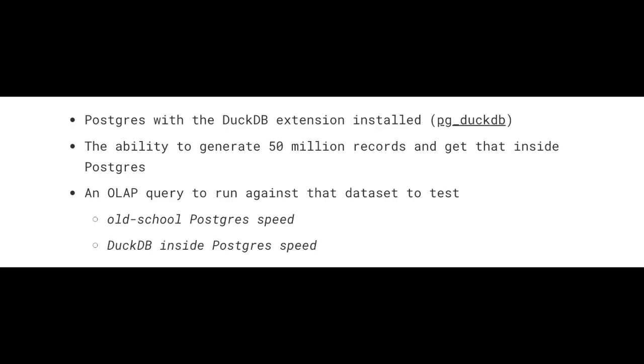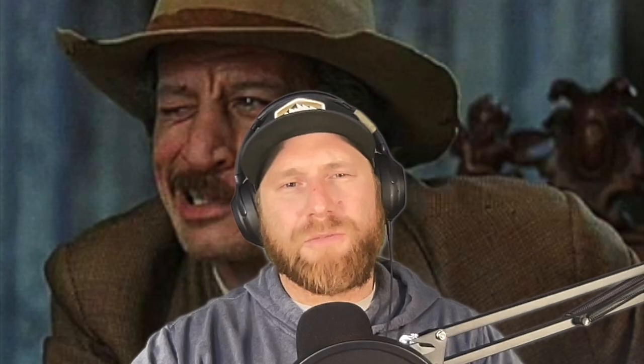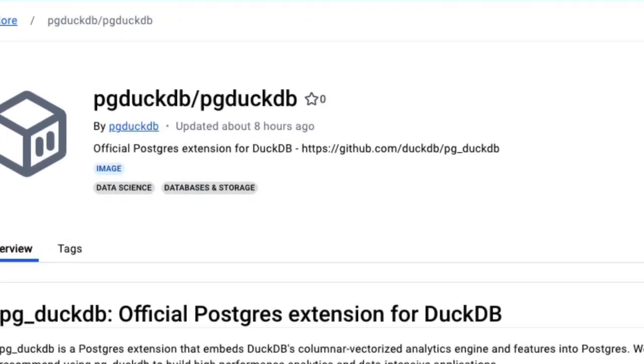Remember, this is a Postgres extension called pg_duckdb. To test it, I generated 50 million records so I could run an analytical query with a GROUP BY aggregation — first in Postgres, then using the DuckDB extension — and just compare query speeds. DuckDB does provide a pre-built Docker image you can use, which is great for testing. I didn't have to go through all the work of installing the extension on RDS.